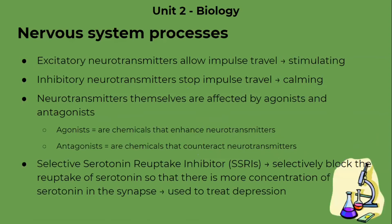There are different types of neurotransmitters: excitatory and inhibitory. Excitatory neurotransmitters, as the name suggests, are exciting or stimulating to the body. Inhibitory neurotransmitters inhibit or stop the impulse from traveling and are calming. Excitatory neurotransmitters allow the impulse to cross the synapse to the other neuron, while inhibitory neurotransmitters prevent the action potential from crossing the synapse onto the other neuron.